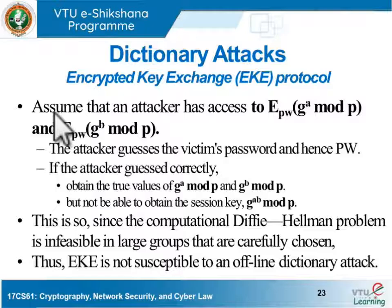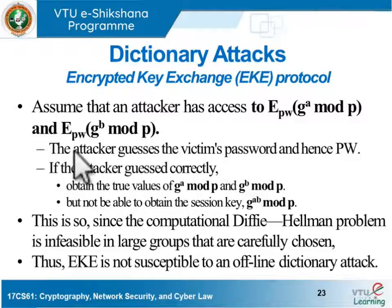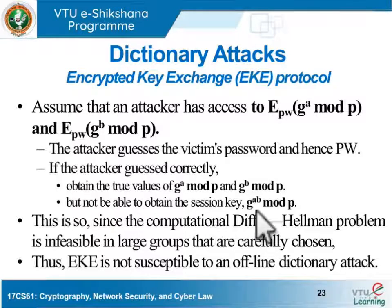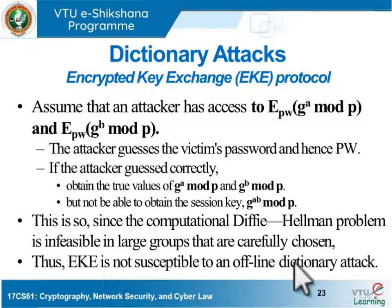Even if an attacker has access to the encrypted public keys of both communicating parties and guesses the victim's password PW correctly, obtaining the true public key values of both parties still does not allow the attacker to obtain the session key. Since the computational Diffie-Hellman problem is infeasible in large, carefully chosen groups, EKE is not susceptible to offline dictionary attacks.